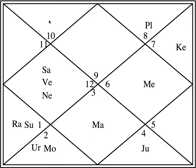Similarly, which house is sixth from the eighth house? Go to the eighth house — count one through eight to find it — then count six from there, and you get back to the lagna. The counting always goes anti-clockwise in the North Indian chart.